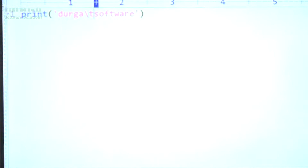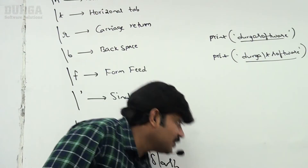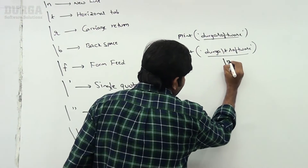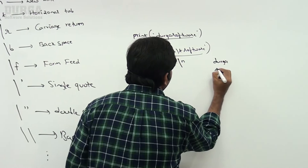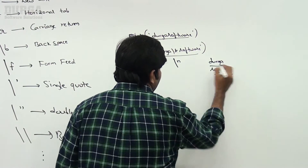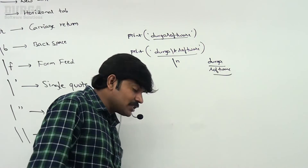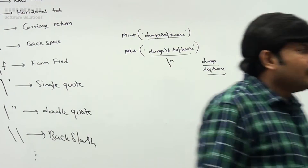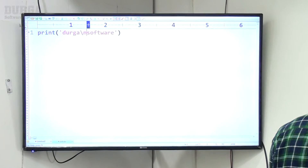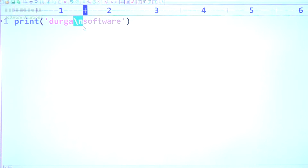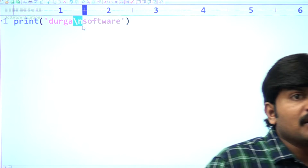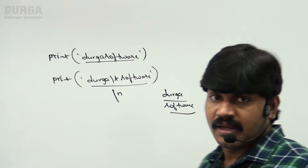Backslash n is the new line character. Instead of backslash t, if I use backslash n, Durga comes in the first line and software comes in the next line. Backslash n means new line. So now it is clear what backslash t and backslash n mean.